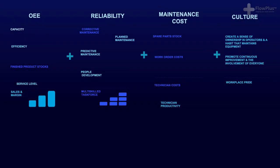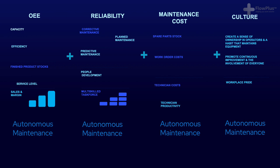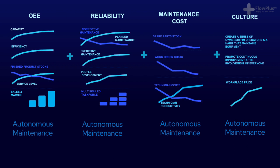Looking back at the four main objectives of TPM — to maximise OEE, improve reliability, reduce maintenance costs, and develop a continuous improvement culture — autonomous maintenance helps achieve all objectives. Operators become upskilled and empowered to maintain their own equipment, so maintenance staff can complete the more preventative tasks, thus helping maximise OEE while reducing downtime, improving reliability, and reducing the associated costs of maintenance.